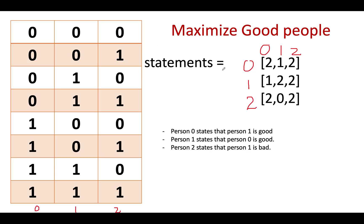Let's analyze the statements from the first example. The array is given as 2,1,2 | 1,2,2 | 2,0,2. I have specified the indexes here as well. These were the statements made by the 0th, 1st, and 2nd persons respectively. So the 0th person stated that the 1st person is a good person, the 1st person stated that the 0th person is a good person, and the 2nd person stated that the 1st person is a bad person.